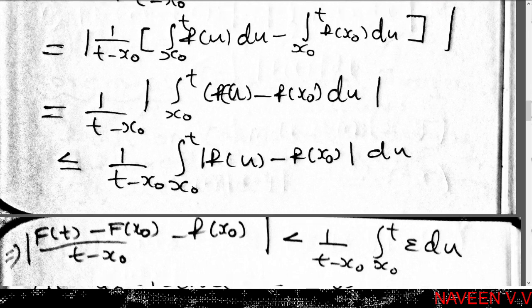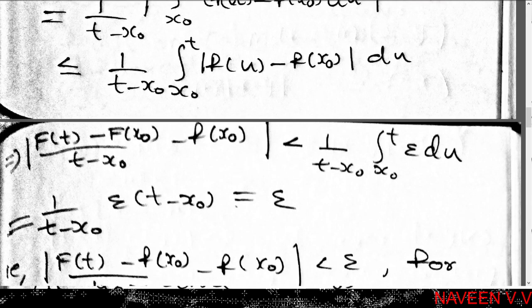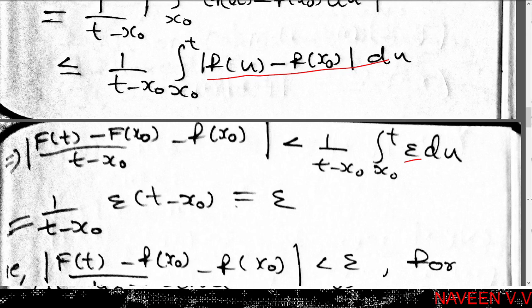For u in [x₀, t], we have |u - x₀| < delta, so by continuity of f at x₀, |f(u) - f(x₀)| < epsilon. Applying the monotonicity property of integration: |[F(t)-F(x₀)]/(t-x₀) - f(x₀)| ≤ 1/(t-x₀) · ∫_{x₀}^t epsilon du = epsilon.